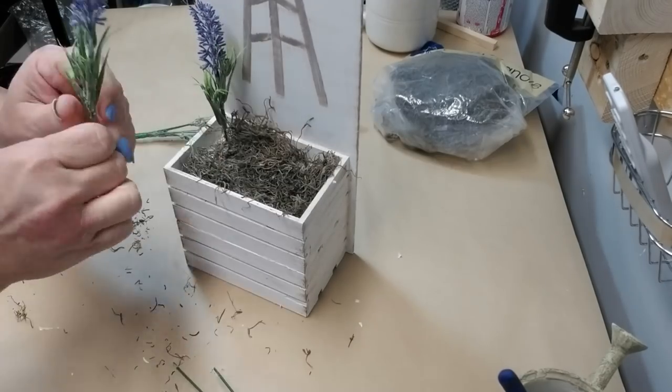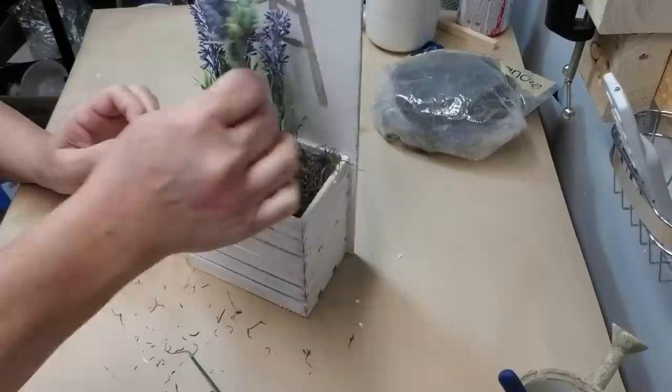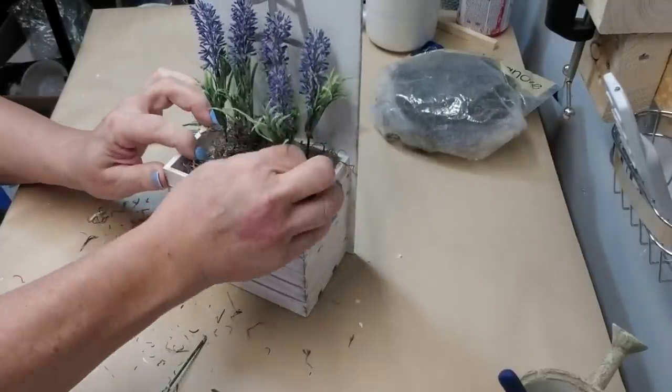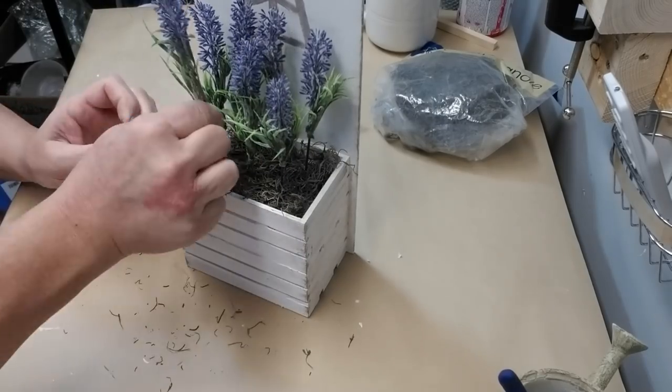I'm just going to start placing the lavender in straight up and down. I'm going to do a row at the back. I think I put four in at the back and then a few more in the front, kind of staggering them, staggering some of the heights as well to make it look as natural as possible.